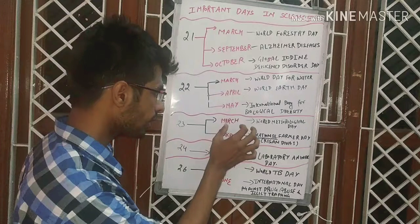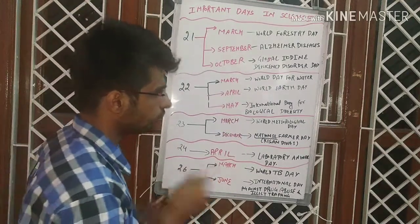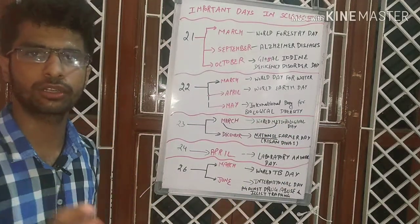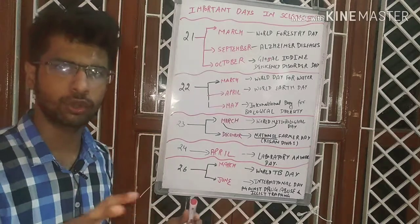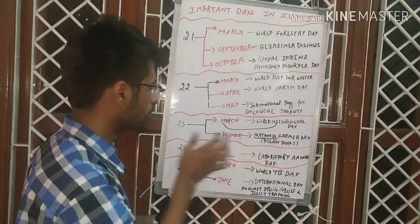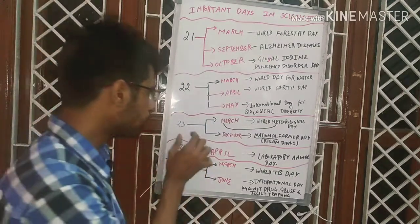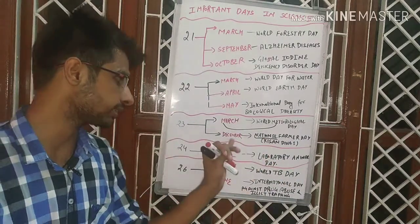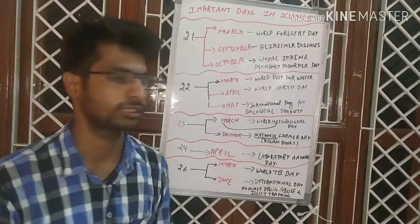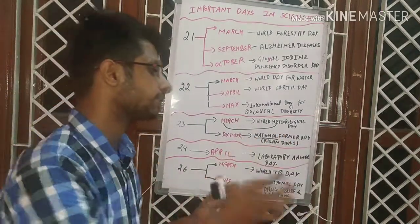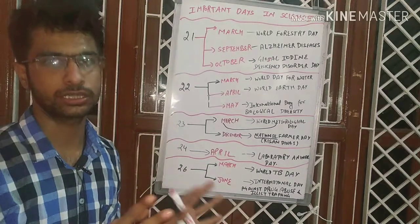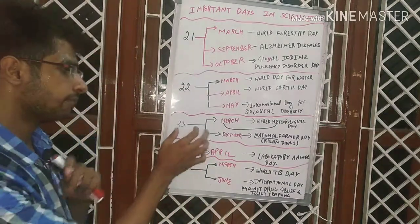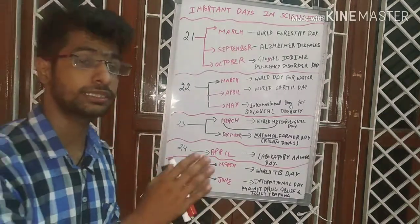23 March is World Meteorological Day. Meteorological centers in Delhi and Mumbai provide weather forecasts. 23 December is National Farmers Day, or Kisan Divas, which is celebrated prominently in the Modi government with focus on farmers. You can remember it by its proximity to Christmas Day on 25 December.